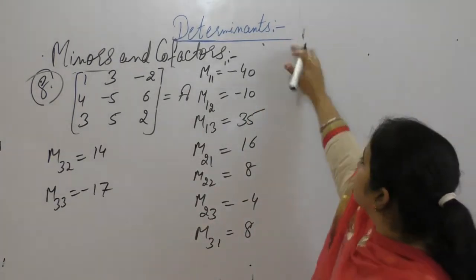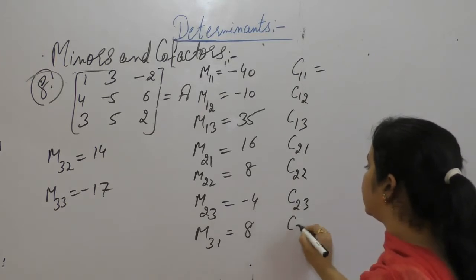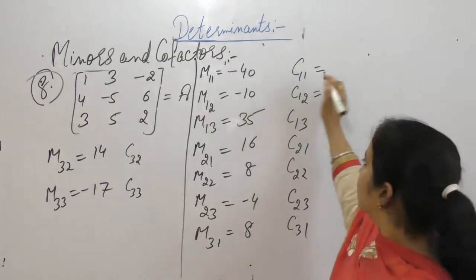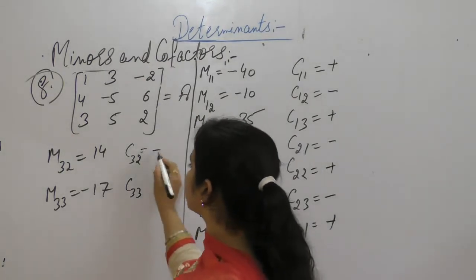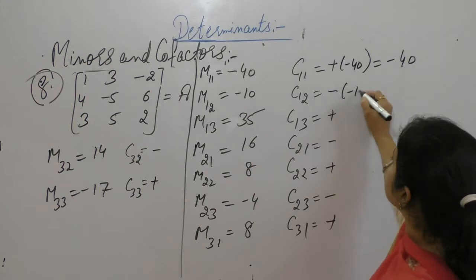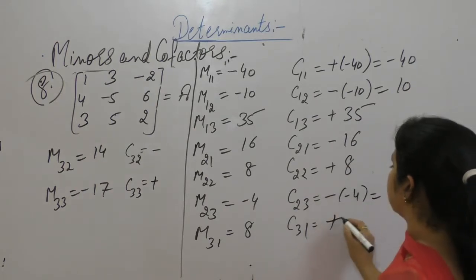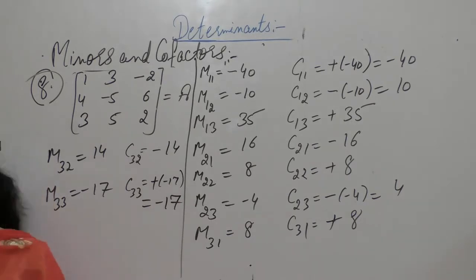Now find cofactors C11 through C33. Using the sign convention based on position indices: C11 is plus minus 40, so minus 40. C12 is minus 10 with sign applied giving plus 10. C13 is plus 35. C21 is minus 16. C22 is plus 8. C23 is minus 8. C31 is plus 8. C32 is minus 14. C33 is minus 17. Note it down.